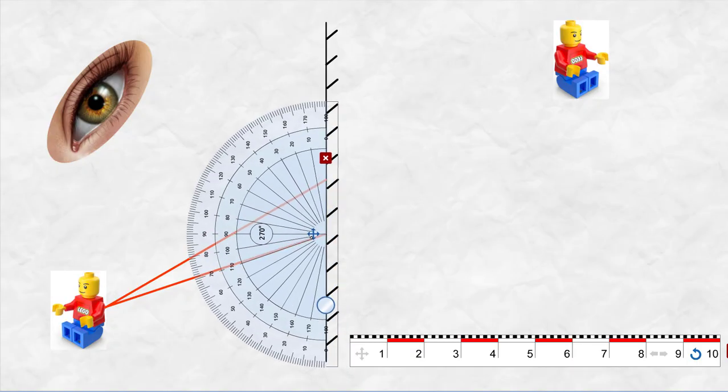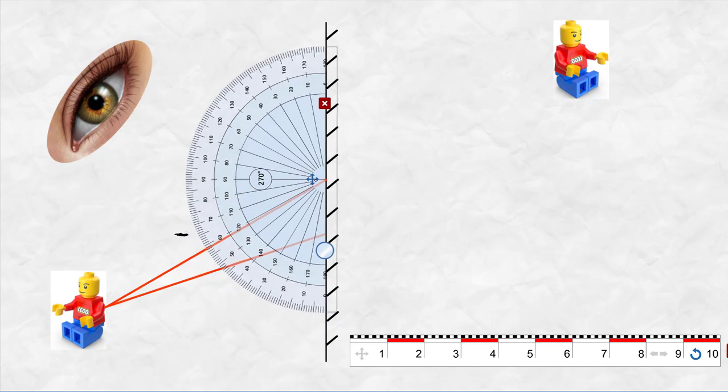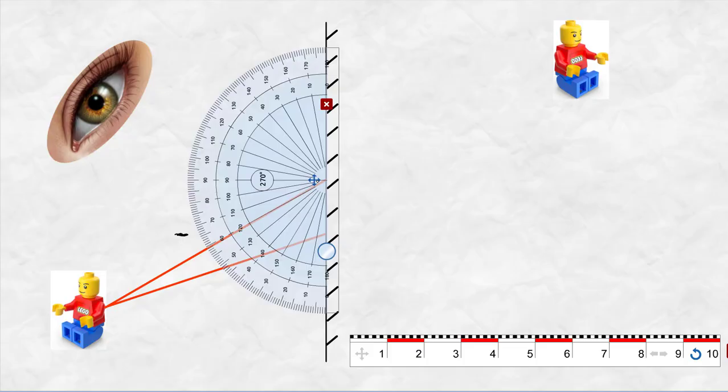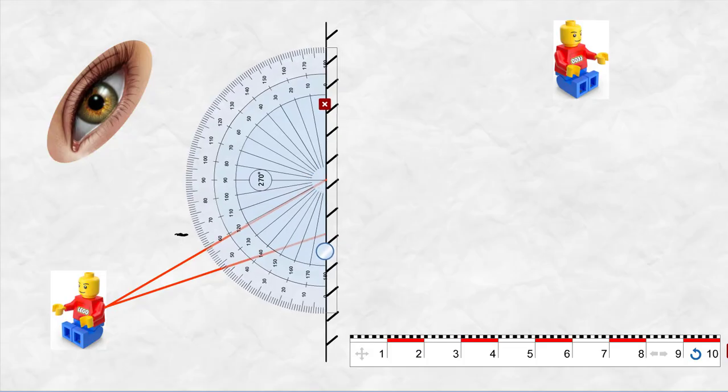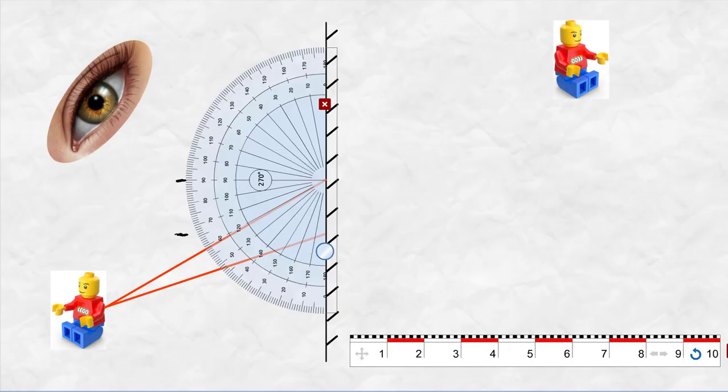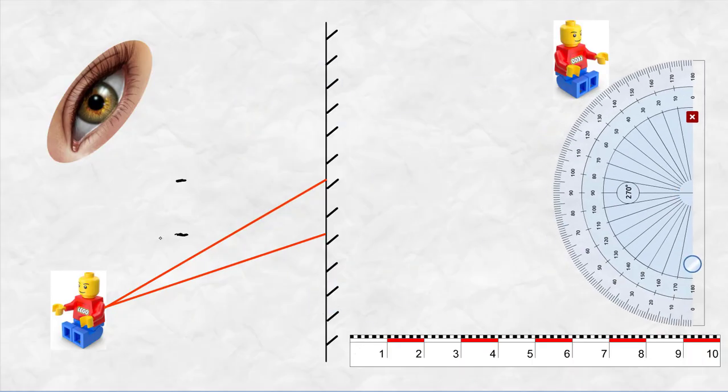You will then collect your protractor, line up the zeros, and measure 90 degrees from where the first ray strikes the mirror, and the same thing for the second ray. Now using those two 90 degrees, we will draw a dotted line down to the surface of the mirror. So those are going to be the two normals where we're going to take our measurements from.